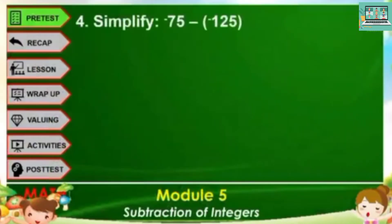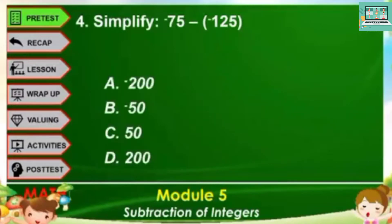Number 4. Simplify negative 75 minus negative 125. A, negative 200. B, negative 50. C, 50. D, 200.